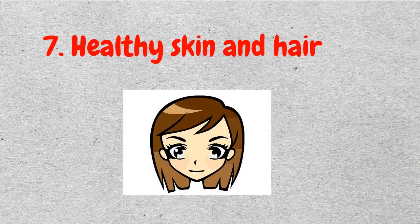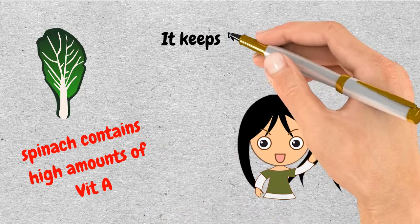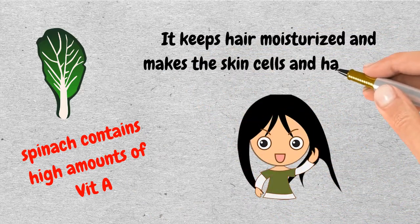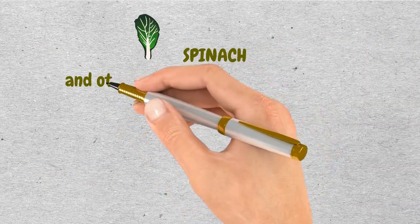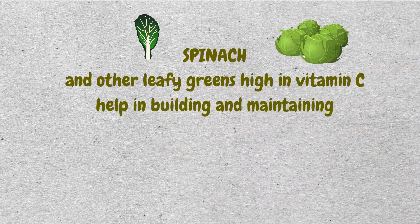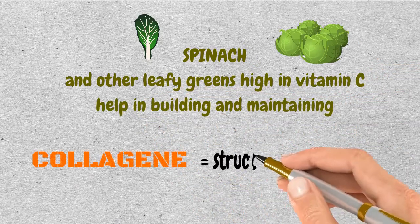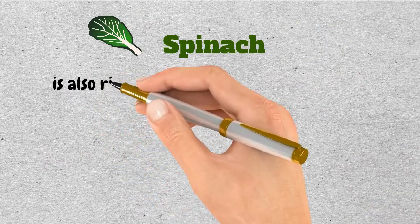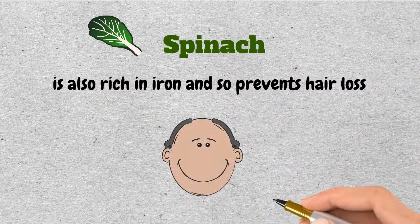Healthy skin and hair. Because spinach contains high amounts of vitamin A, it keeps hair moisturized and makes the skin cells and hair grow. Spinach and other leafy greens high in vitamin C help in building and maintaining collagen, which provides structure to skin and hair. Spinach is also rich in iron and so prevents hair loss.